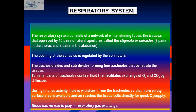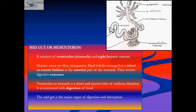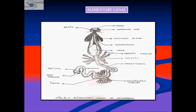To summarize how digestion takes place in cockroaches: digestion starts in the mouth, where mandibles and maxillae chew the food, which is also acted upon by salivary carbohydrases that partially digest it. Food is then swallowed with lubrication provided by salivary juices.